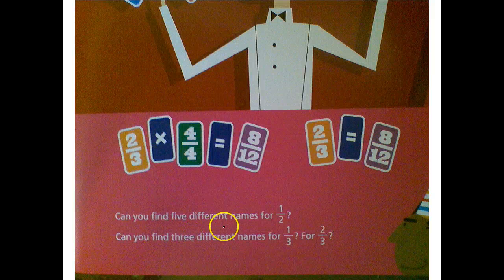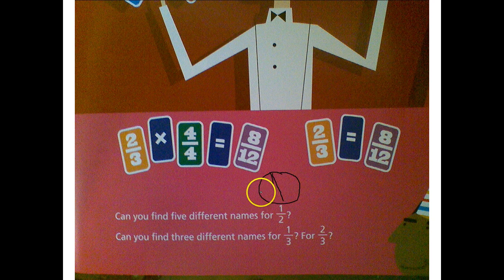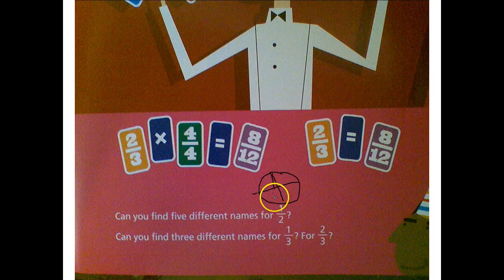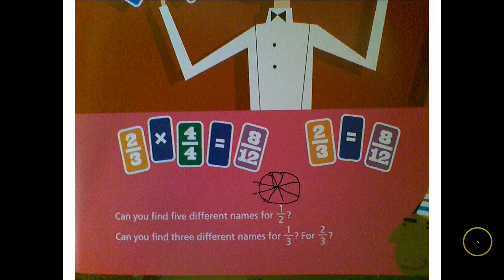Can you find five different names for one-half? Can you find three different names for one-third? Let's think about one-half. If we were to divide it again, we could see that one-half is the same as two-fourths. If we divide our whole again, we can see that one-half is the same as four-eighths. On a piece of paper, you can do the same thing using bar models or circle models to find different names for different fractions.